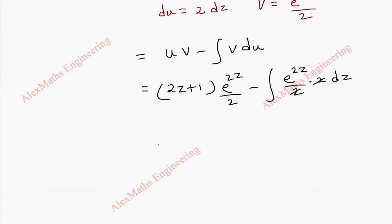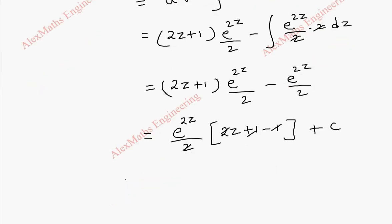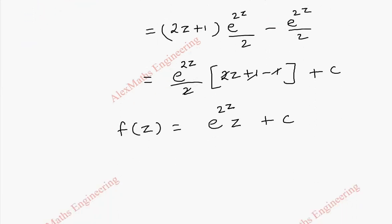After canceling, the remaining integral gives e^(2z)/2. Taking e^(2z)/2 common, we get (2z+1) minus 1, which simplifies to 2z. So e^(2z)/2 times 2z equals e^(2z)·z plus constant c. Therefore f(z) = i·e^(2z)·z + c.